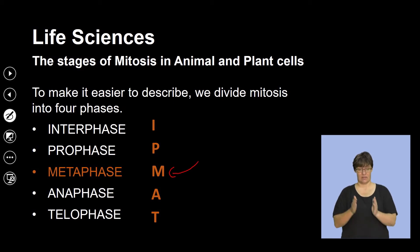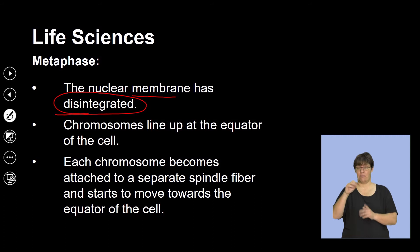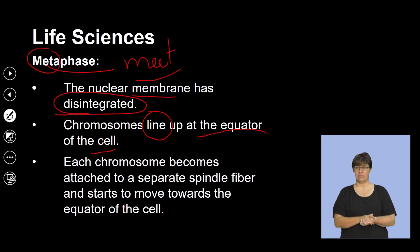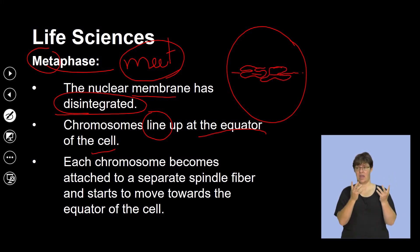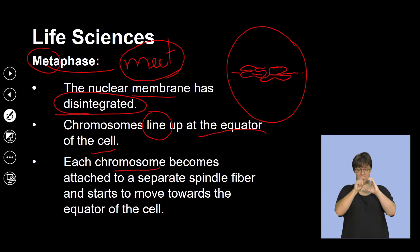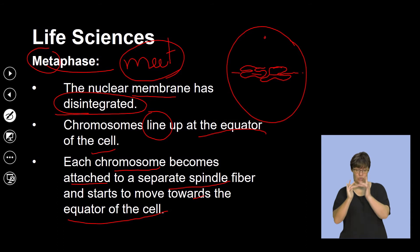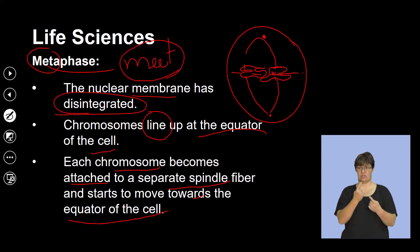As we move on to metaphase, in this phase the nuclear membrane has disintegrated and the outer membrane has disappeared. The chromosomes now line up at the equator — I use the word 'meet' to remind me of what is happening. Along this imaginary equator, the chromosomes tend to line up and meet at a point in the middle of the cell. Each chromosome becomes attached to spindle fibers and starts to move towards the equator.